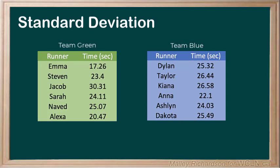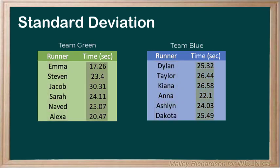Two teams competed in a 200m sprint over the weekend. Both teams had six runners each in the race, and their times were recorded below. After the race, they argue over which team ran a better race. How can we decide this? Well, let's take a look at the stats.